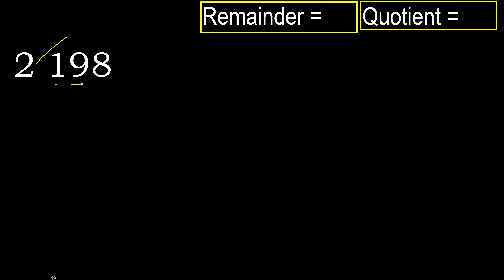2 multiplied by which number is nearest to 19, but not greater? 2 multiply by 9 is 18, is not greater. Ok, subtract 1.